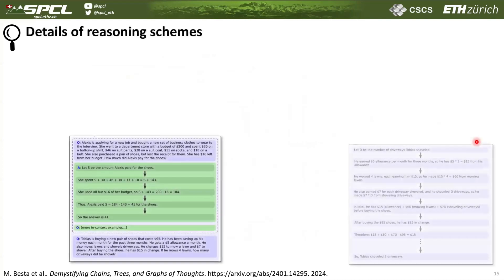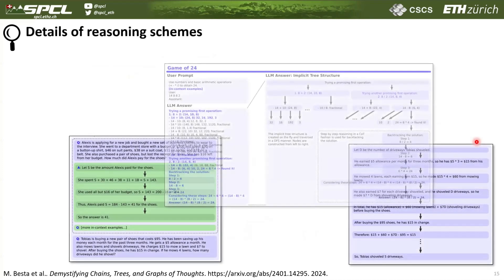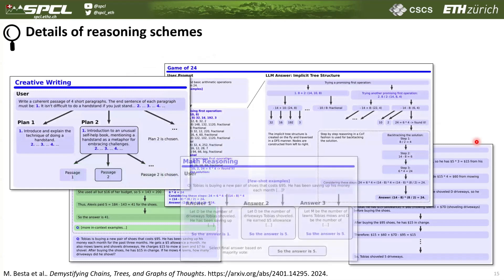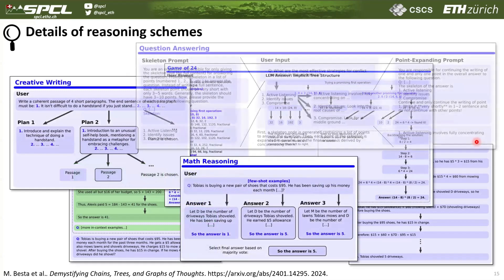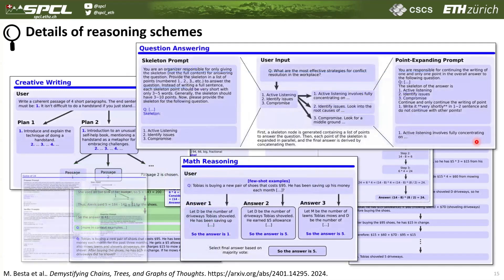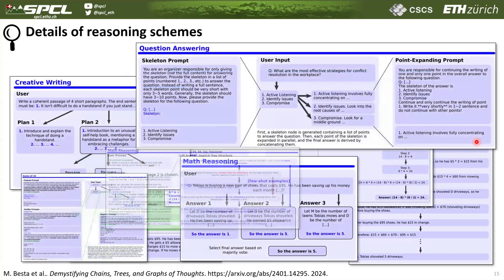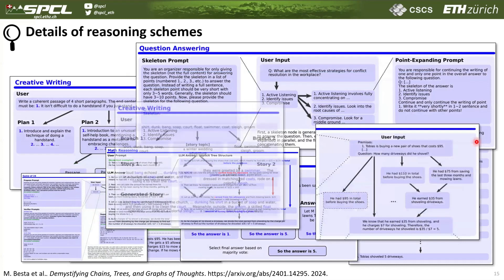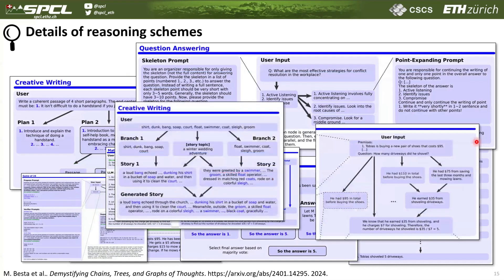We also provide lots of examples illustrating both the prompts, the replies, and the whole human-LLM conversations, but also in the context of these structures — how do these chain, tree, and graph structures emerge and are visible in these conversations and in this LLM reasoning.